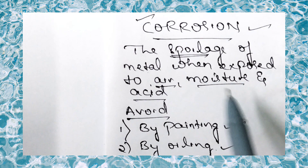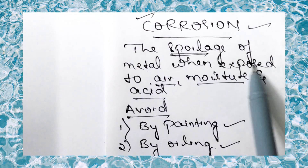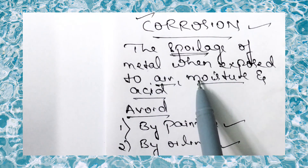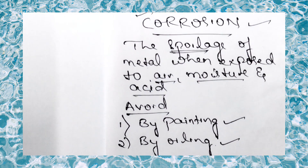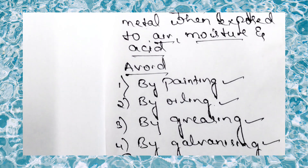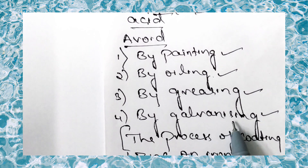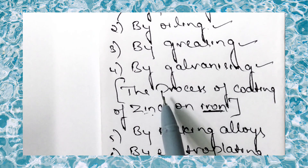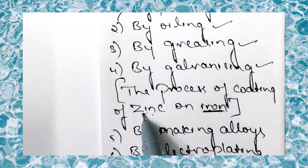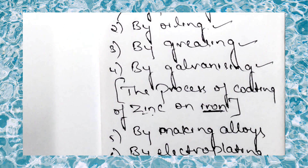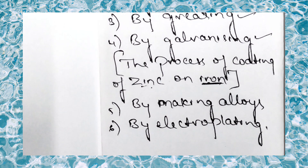To summarize corrosion: corrosion is the spoilage of metal when exposed to air, moisture, and acid. To avoid corrosion: painting, oiling, greasing, galvanizing — which is the process of coating zinc on iron — making alloys, and electroplating.